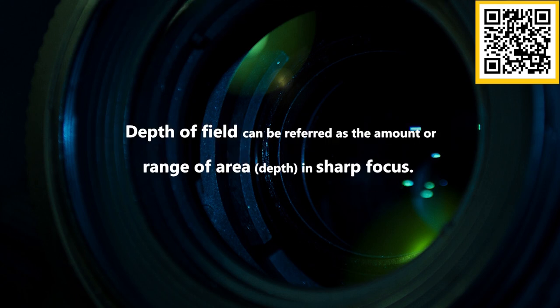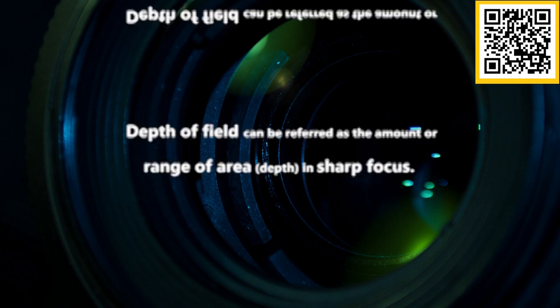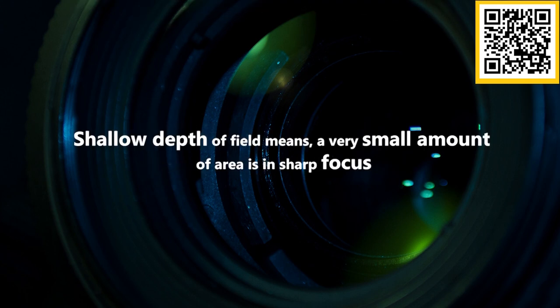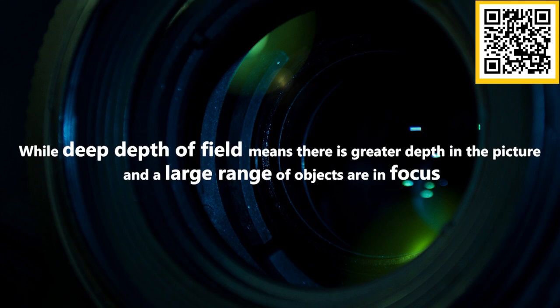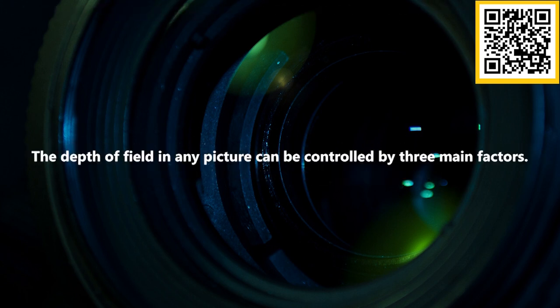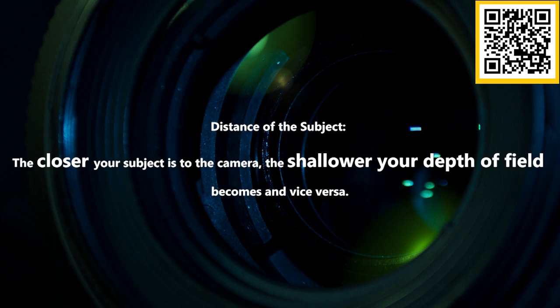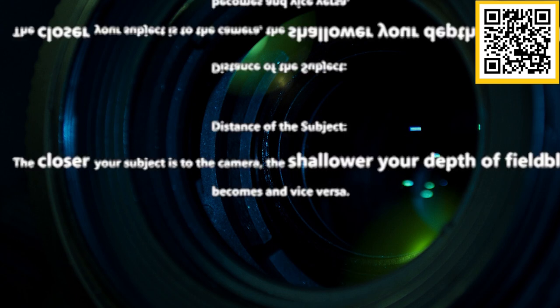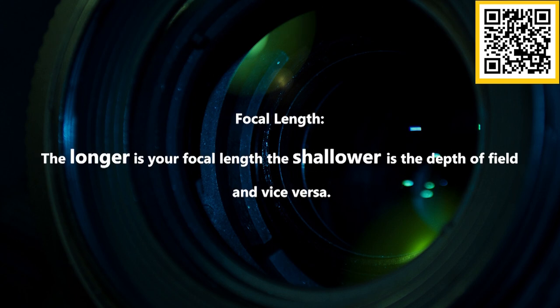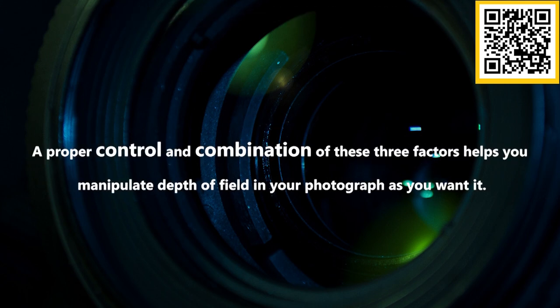Lens aperture is the opening inside a lens through which light enters. Depth of field refers to the range of area in sharp focus: shallow depth of field means a very small area is in sharp focus, while deep depth of field means a large range of objects are in focus. Depth of field is controlled by three main factors: aperture (the larger the aperture, the shallower the depth of field), subject distance (the closer the subject, the shallower the depth of field), and focal length (the longer the focal length, the shallower the depth of field). A proper combination of all three helps you manipulate depth of field as desired.